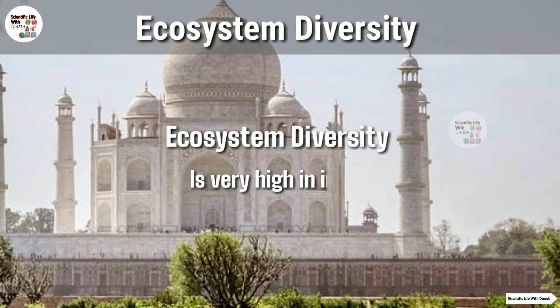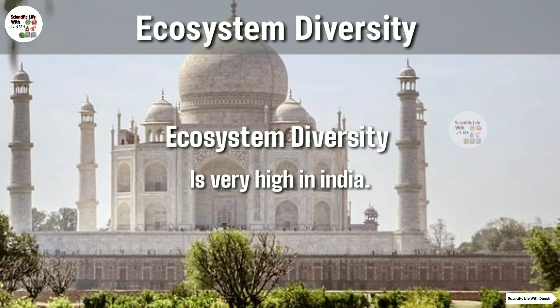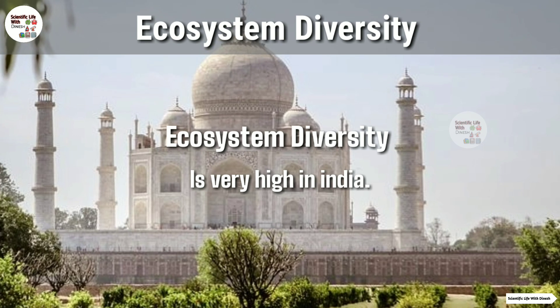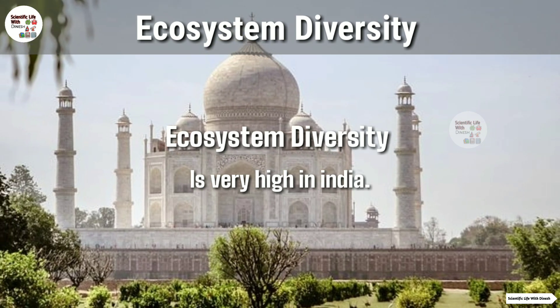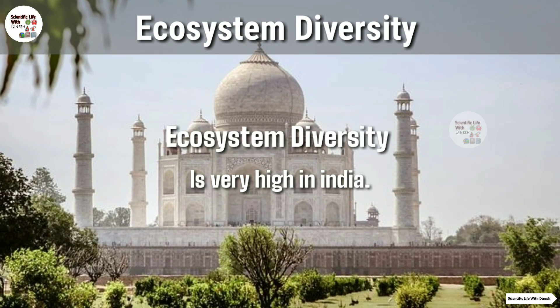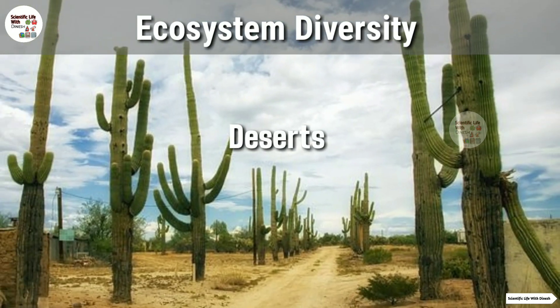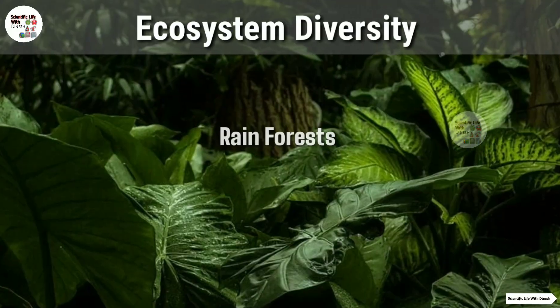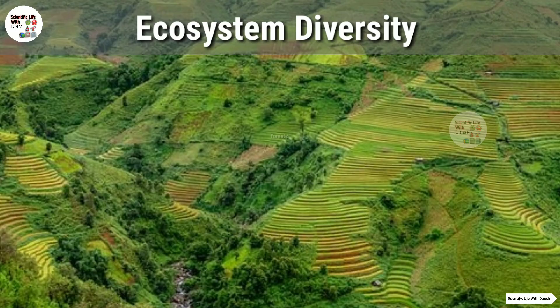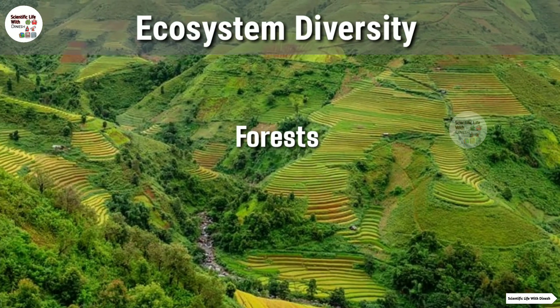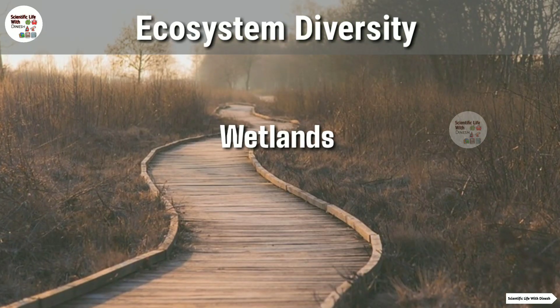Ecosystem diversity is very high in India because our country has a large number of ecosystems like deserts, rainforests, forests, wetlands, etc.